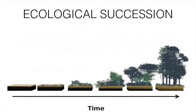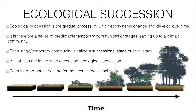Ecological succession is a gradual process by which an ecosystem changes and develops over time. It is a series of predictable temporary communities or stages leading up to a climax community. Each temporary stage is called a successional stage. All habitats are in a state of constant ecological succession, and each step prepares the land for the next successional stage.